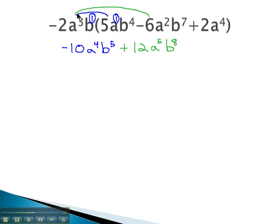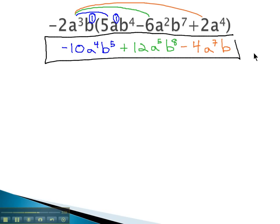And then finally, we distribute onto the very last term. Negative 2 times 2 is negative 4. We'll add the exponents on a, 3 plus 4 is 7. And for the b's, there's no additional b's, but we still have the b to the 1st or simply b. And this gives us our final product of negative 10a to the 4th, b to the 5th, plus 12a to the 5th, b to the 8th, minus 4a to the 7th, b.